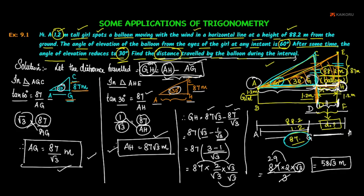So the answer is 58 root 3 meters. The distance traveled by the balloon from position C to E is 58 root 3 meters. This is calculated using the angles of elevation of 60 degrees and 30 degrees.